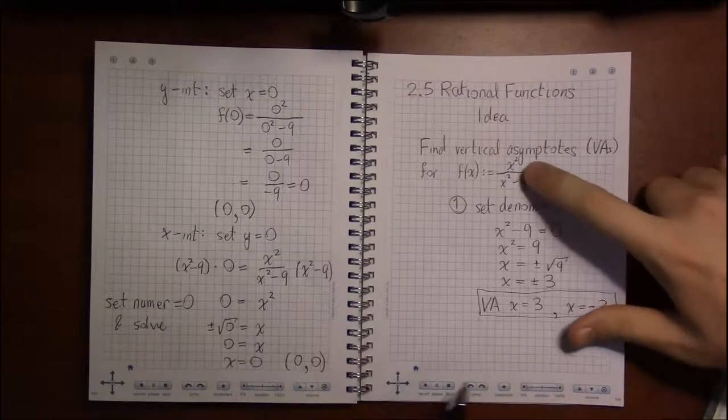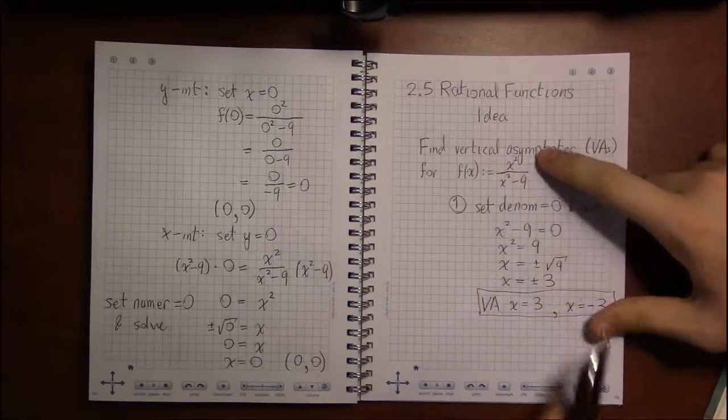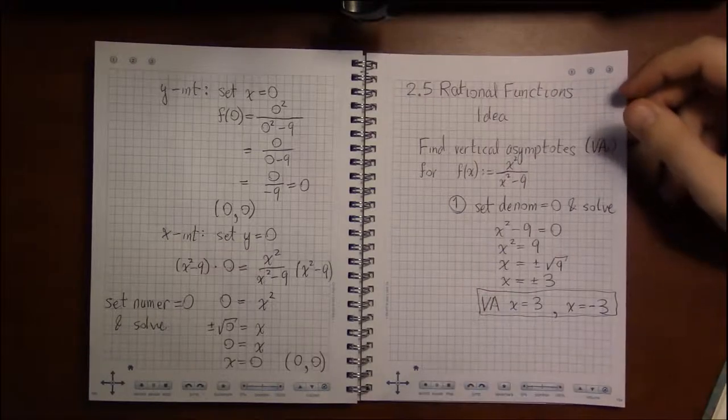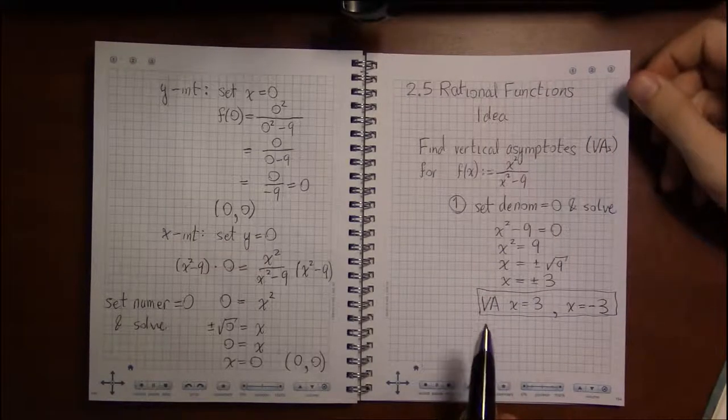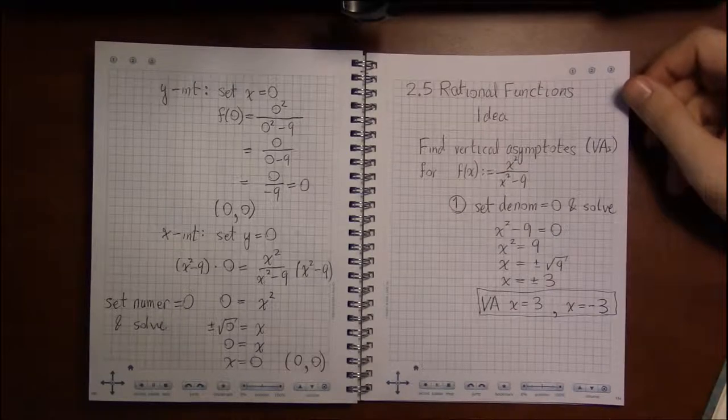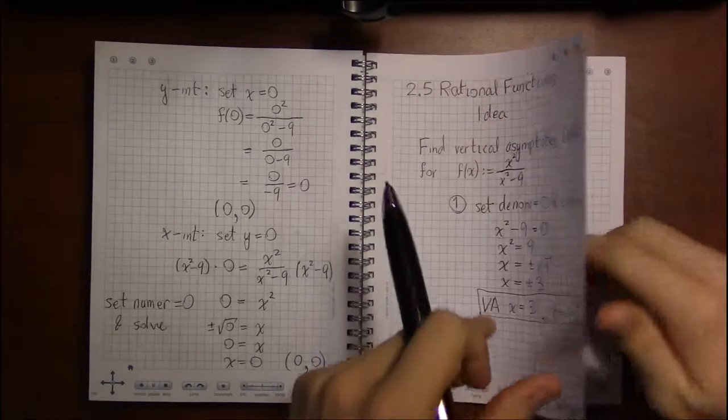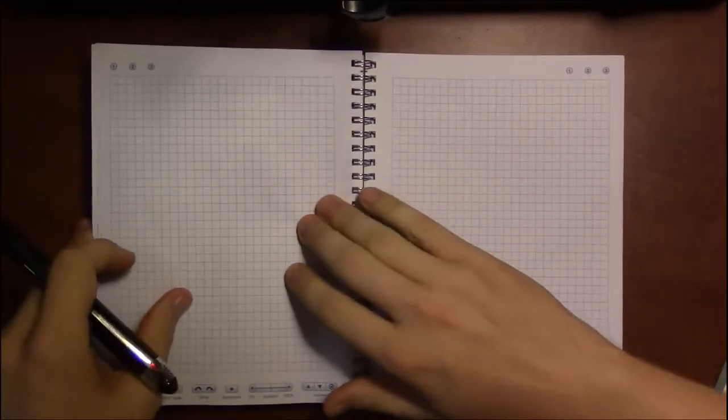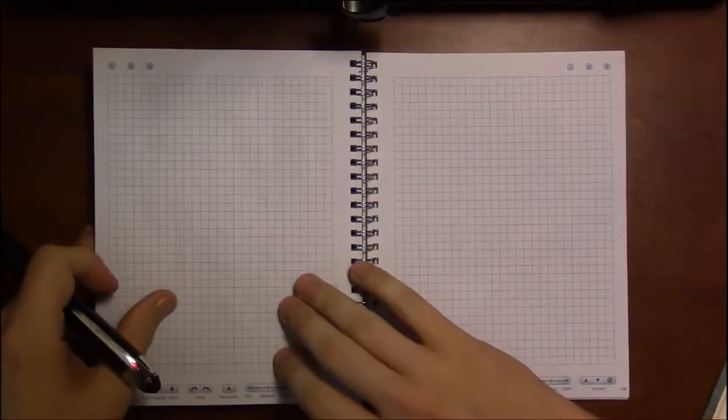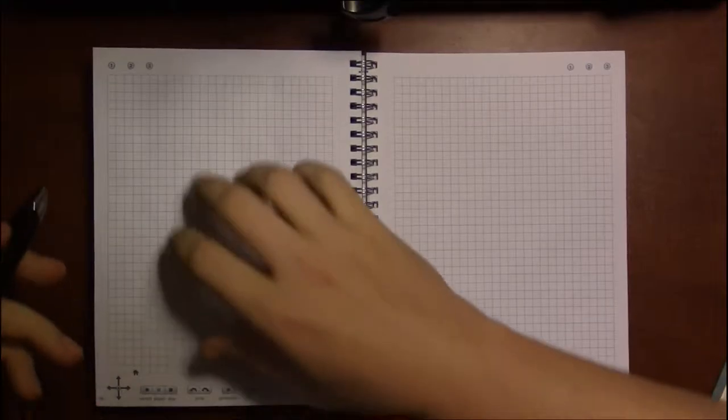The x-intercepts are found by setting the numerator equal to zero when everything is reduced. The harder part is finding the horizontal asymptotes. And if you really want to know where all these rules come from that I'm about to give you, take calculus.